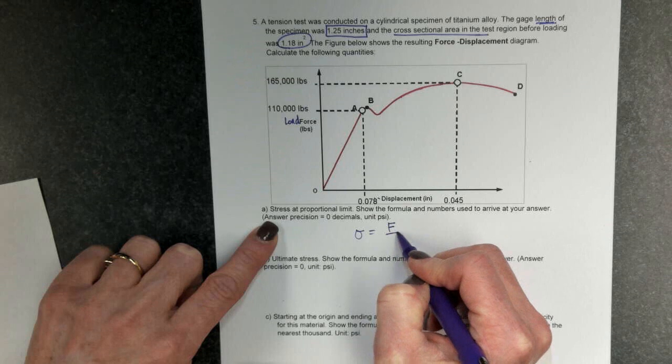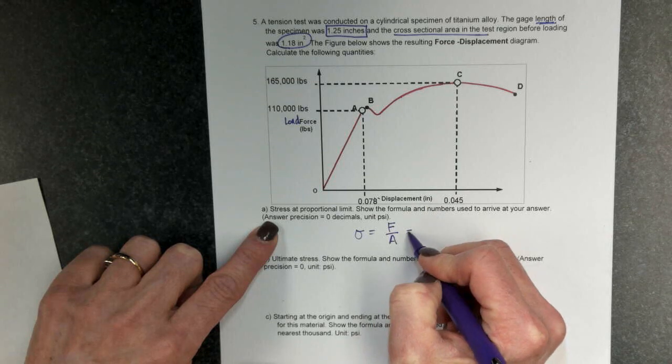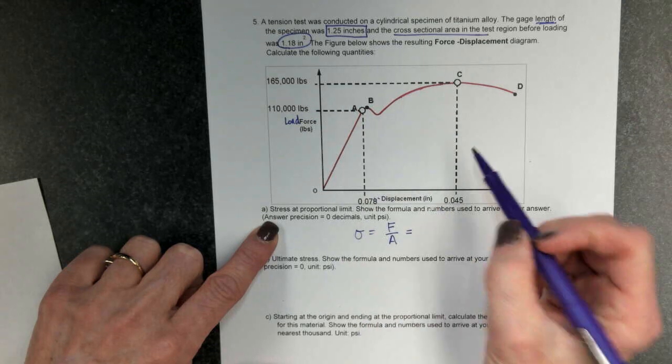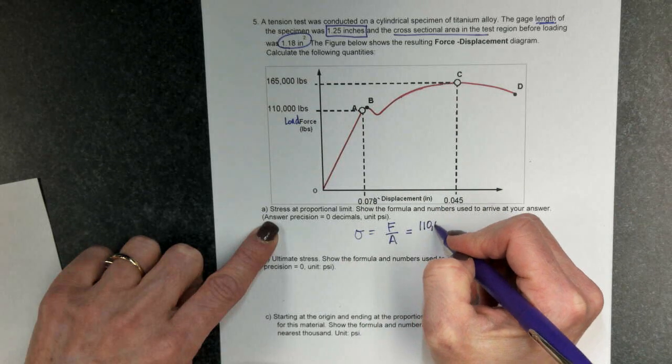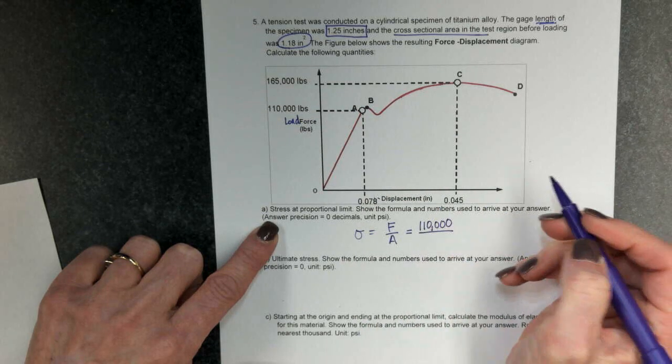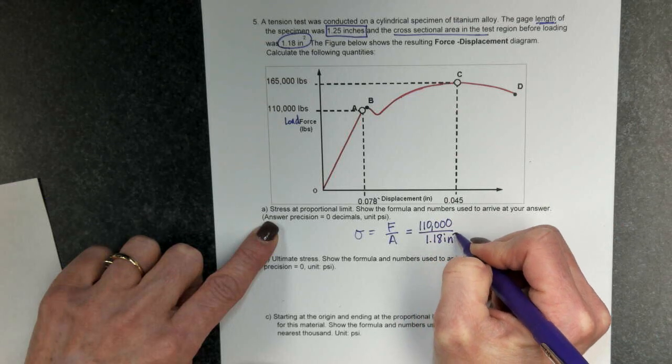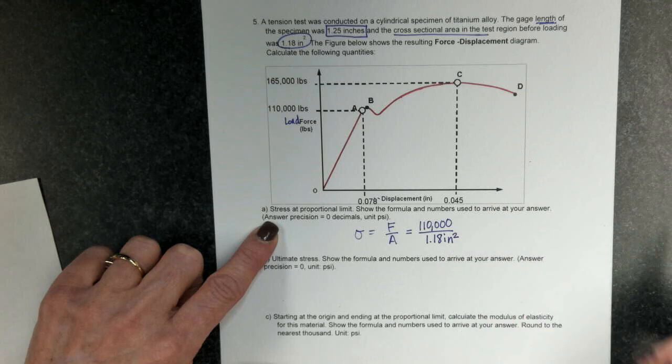So I look over here at my force at my proportional limit, and I find it to be 110,000 pounds. And I'm going to divide by my cross-sectional area, which was given to me as 1.18 inches squared.